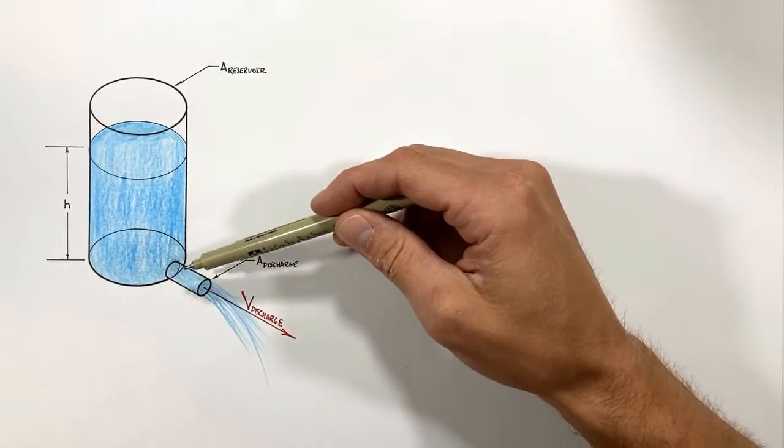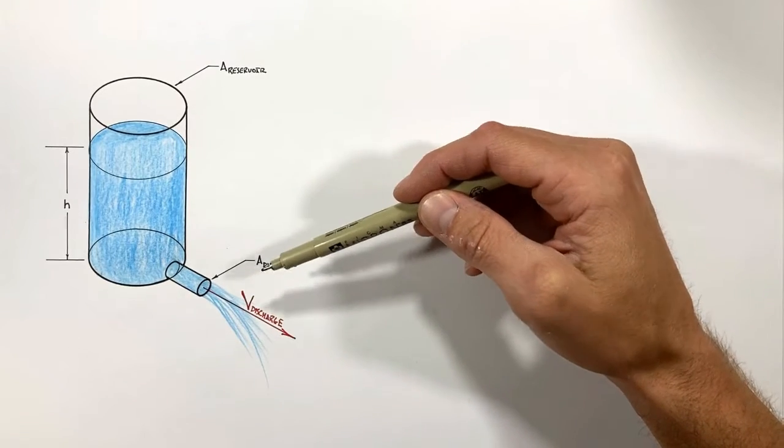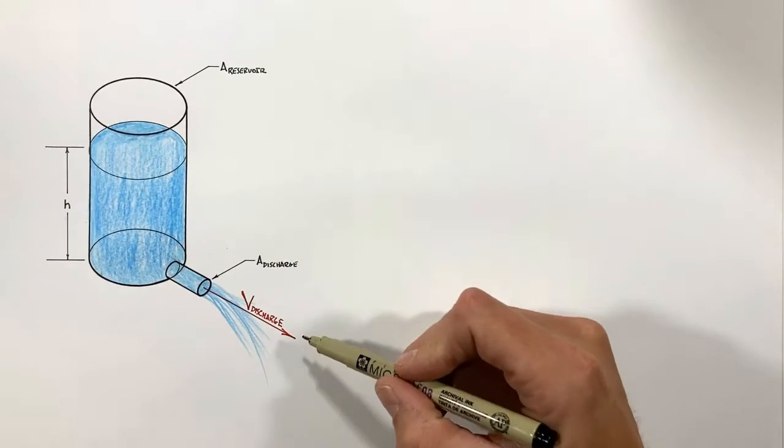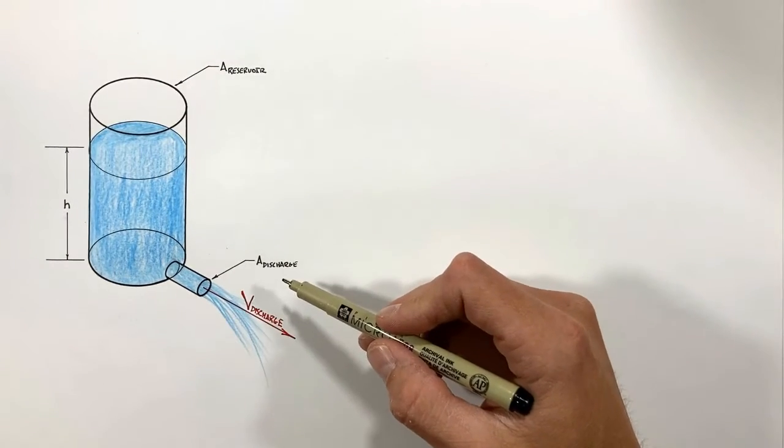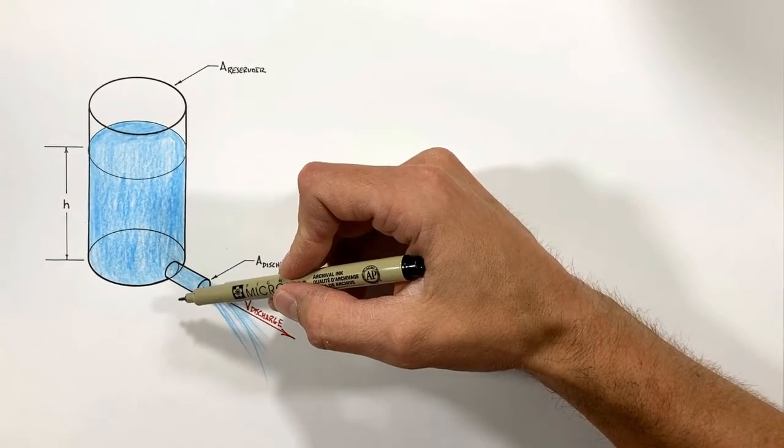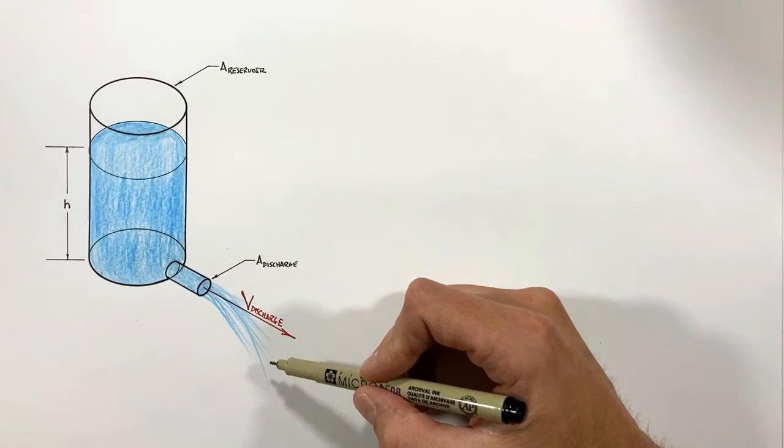At the bottom of that reservoir there's a discharge hole through which the fluid can drain. Now there's a couple of different variations on this problem. In this video we're going to solve for the velocity of this fluid as it exits the discharge hole. Then in the next video what I want to do is take a look at the time it takes to drain the entire reservoir.